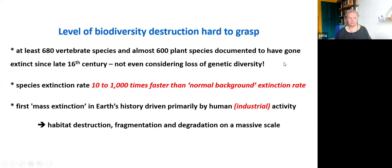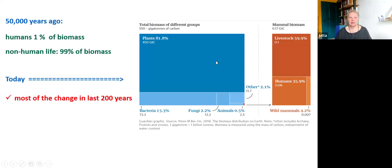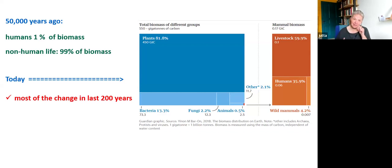That's only looking at species diversity loss, not even considering the loss of genetic diversity within species. The rate of species extinction is between 10 and 1,000 times higher than the normal background extinction rate. It is also the first mass extinction in the Earth's history that is primarily driven by human industrial activity — not all humans equally — through habitat destruction, fragmentation, and degradation at a massive scale. Roughly 50,000 years ago, humans made up around 1% of the biomass; non-human life made up 99%. Today, humans and their livestock make up the vast majority, and wild mammals only make up 4.2% of the biomass. Most of that change has happened in the last 200 years.